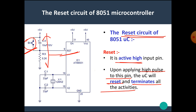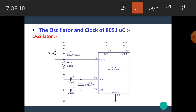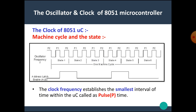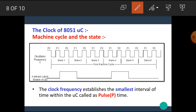The next point is the oscillator and clock of the 8051 microcontroller. There are mainly two pins for the oscillator circuit: XTAL1 and XTAL2. These pins are used to generate a clock for the microcontroller. For that purpose, a quartz crystal is placed with two capacitors having a value of 30 pF or 33 pF. This circuitry generates the clock signal of the 8051 microcontroller, which is also called the heart of the microcontroller.